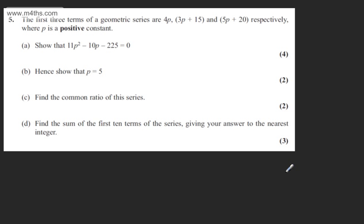This is question 5. We're told the first three terms of the geometric series are 4p, 3p plus 15, and 5p plus 20 respectively, where p is a positive constant.